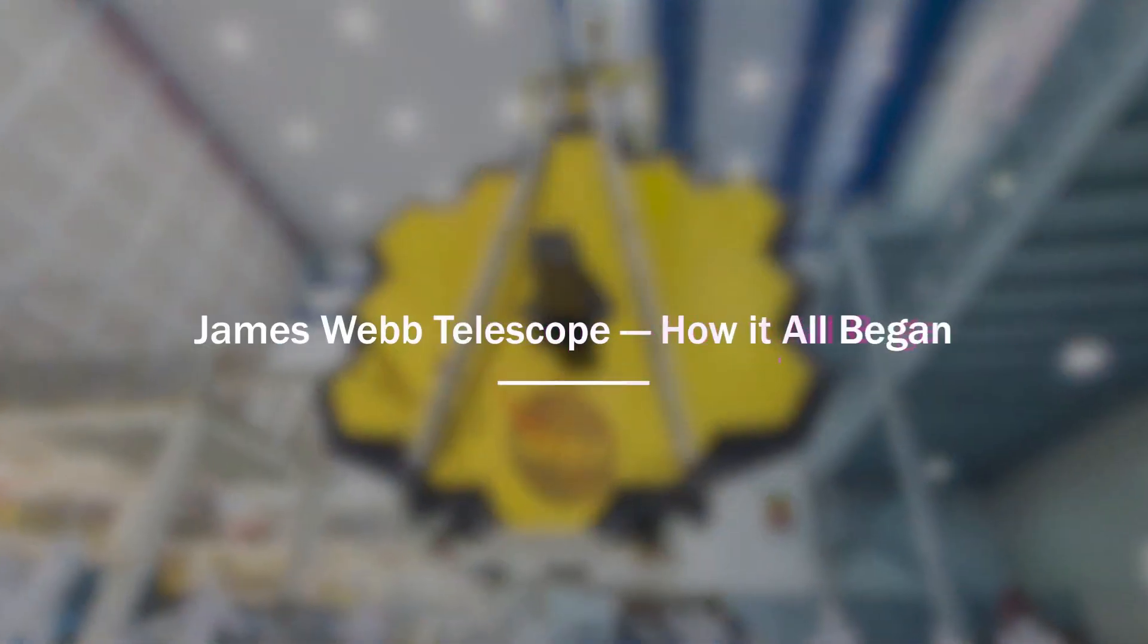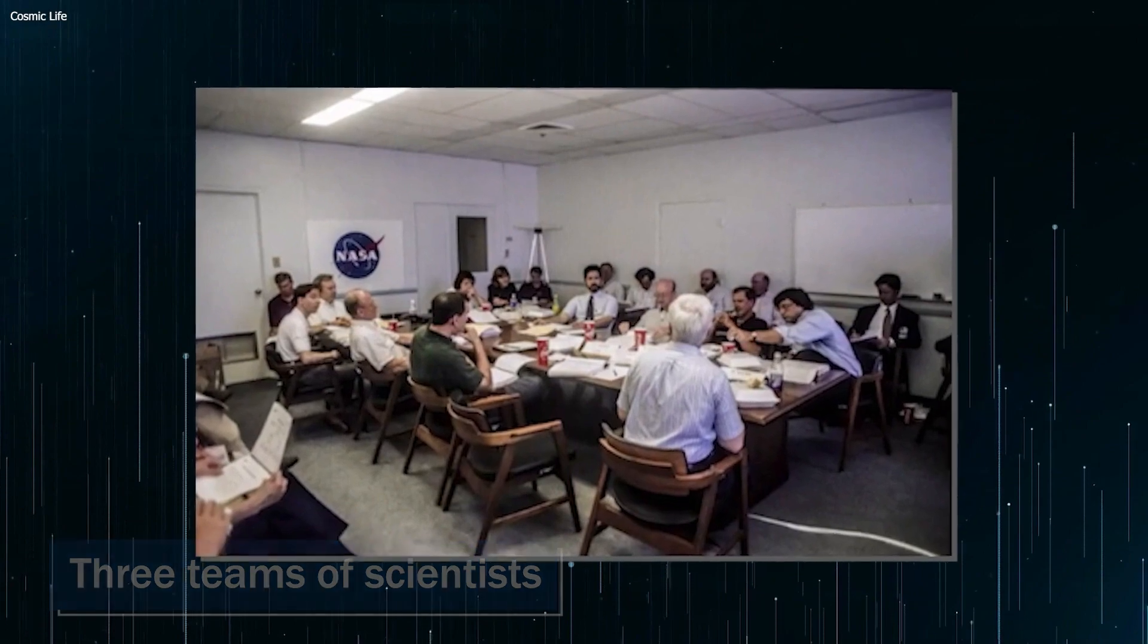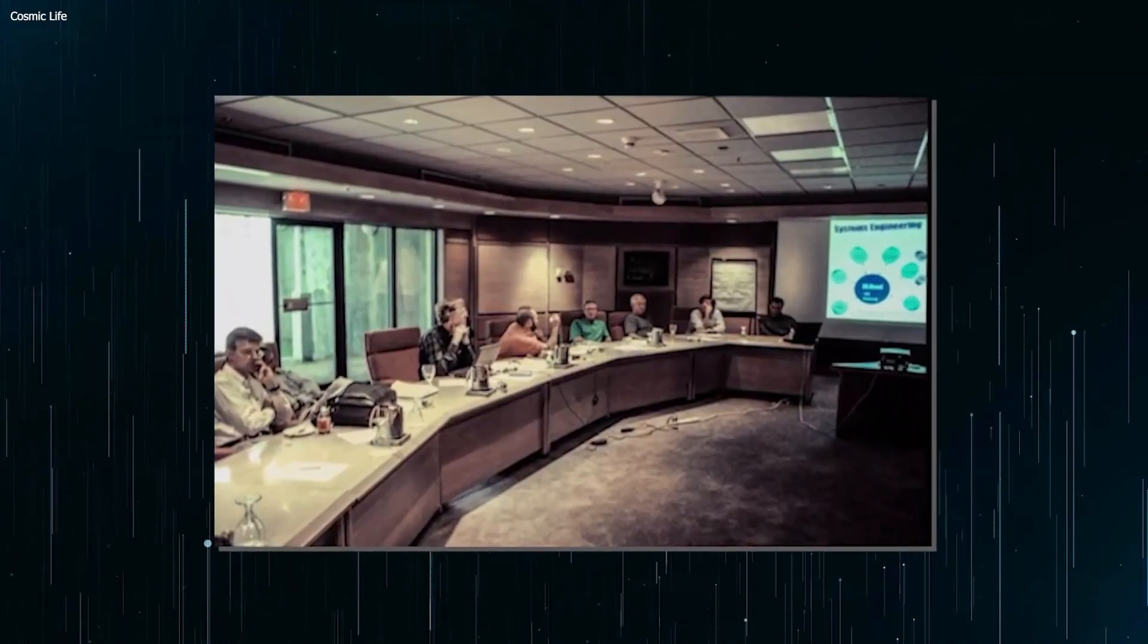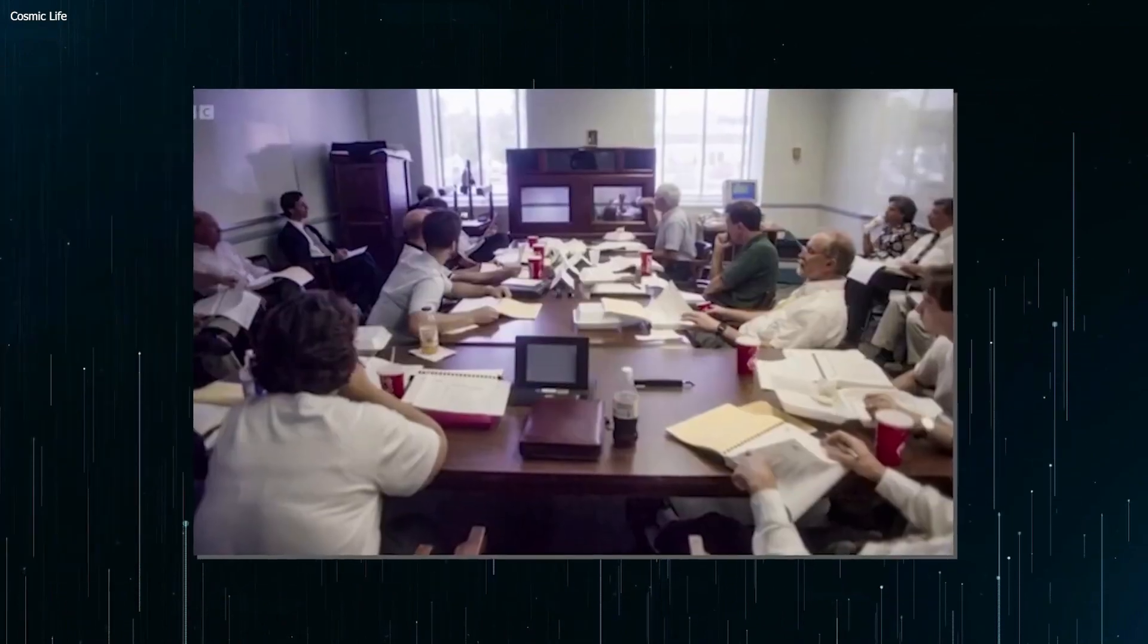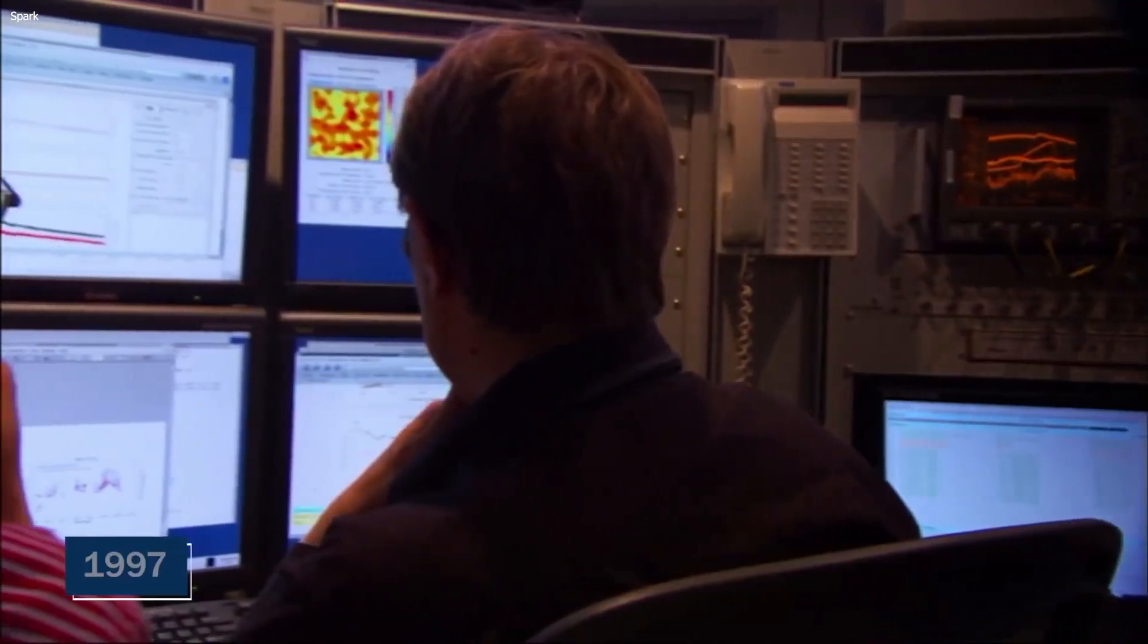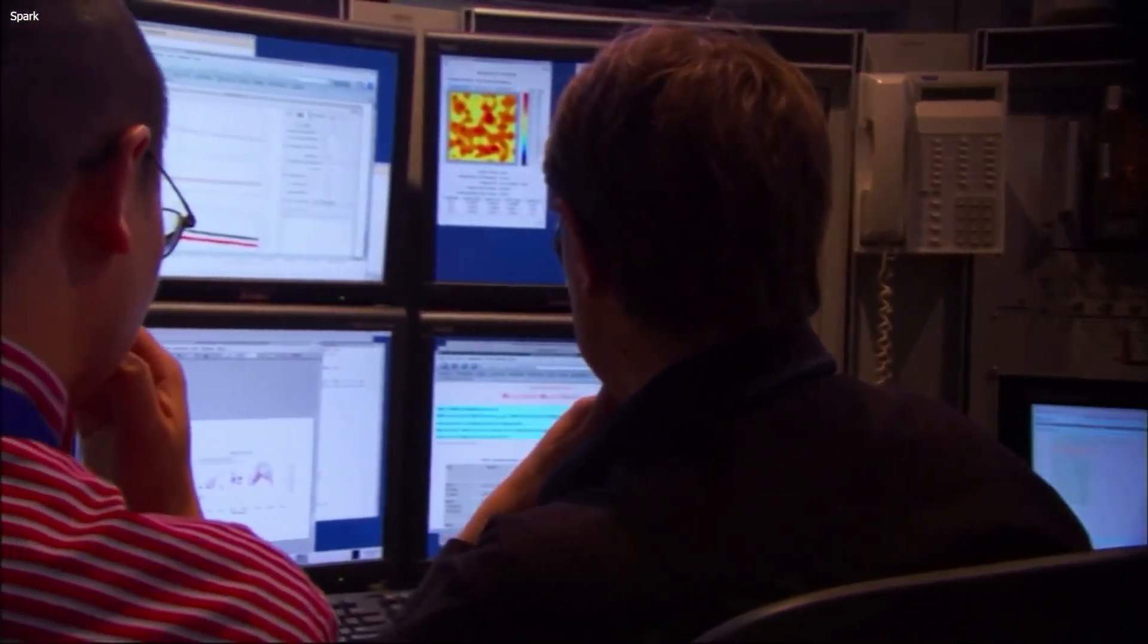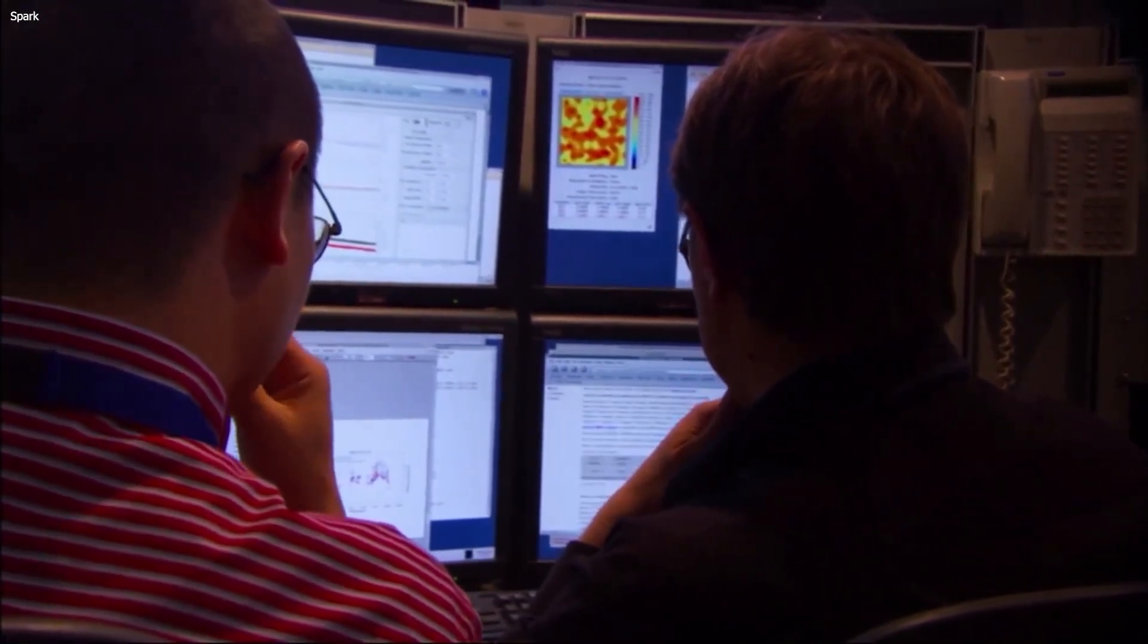The James Webb Telescope, how it all began. After the initial recommendation for the telescope in 1996, three teams of scientists and engineers from both public and private sectors met to assess NASA's feasibility in building the proposed telescope. All three teams concluded that the telescope could be built, and in 1997, NASA agreed to fund additional studies to further refine its technical and financial requirements.